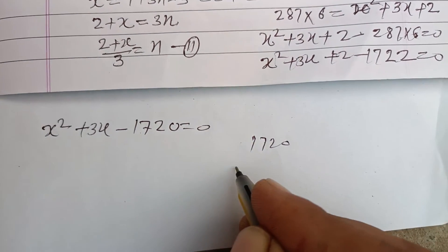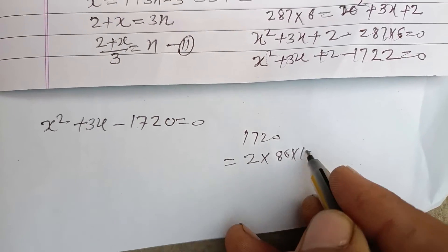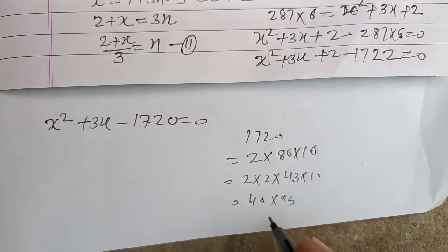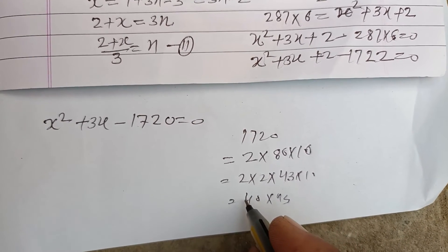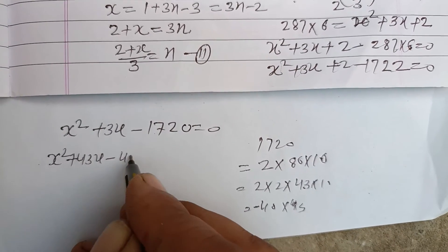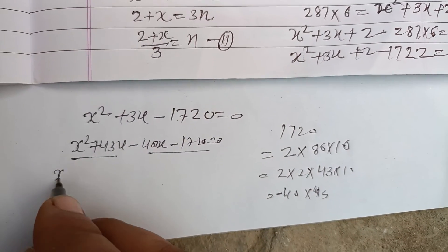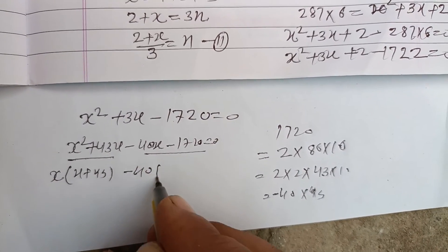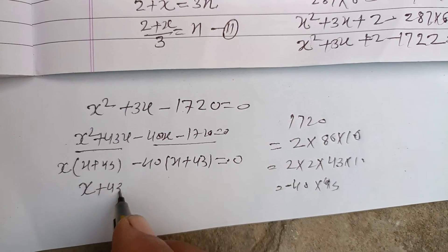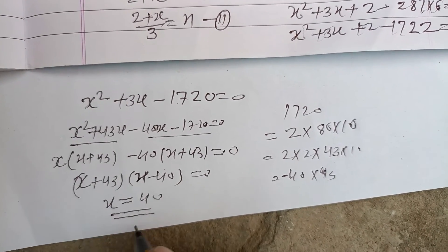Now factorizing 1720: this is 2 times 860, or 40 times 43. So the factors are minus 40 and plus 43. Thus: x squared plus 43x minus 40x minus 720 equals 0, giving x(x plus 43) minus 40(x plus 43) equals 0. Therefore (x plus 43)(x minus 40) equals 0, giving x equals 40.